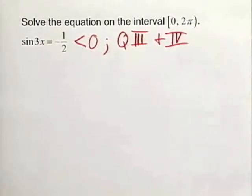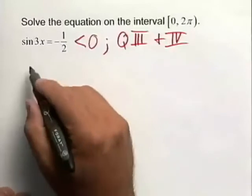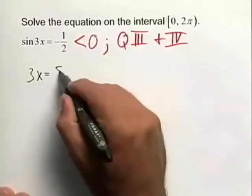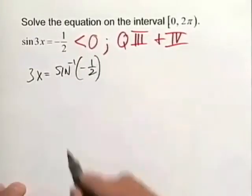The first thing we want to do here is isolate the 3x, and we're going to undo the sine by taking the inverse sine of both sides. So taking the inverse sine of the left will leave us with simply 3x. On the right, we'll have the inverse sine of negative 1 half.